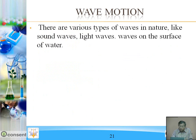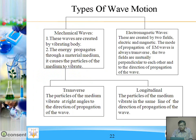There are various types of waves in nature: sound waves, light waves, waves on the surface of water. Types of waves: mechanical waves and electromagnetic waves. Mechanical waves are classified into two types — transverse and longitudinal. Mechanical waves are created by a vibrating body and energy propagates through a material medium, causing particles of the medium to vibrate.